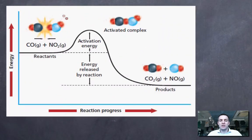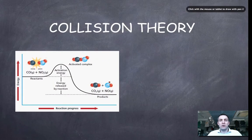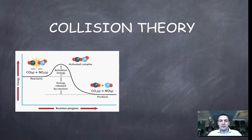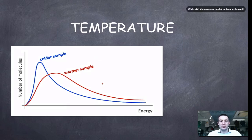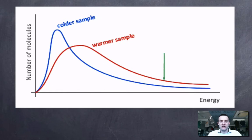Collision theory says particles have to collide, but it also says they have to collide with enough energy to reach the activated complex or transition state — in other words, enough energy to exceed the activation energy so that they can turn into products.